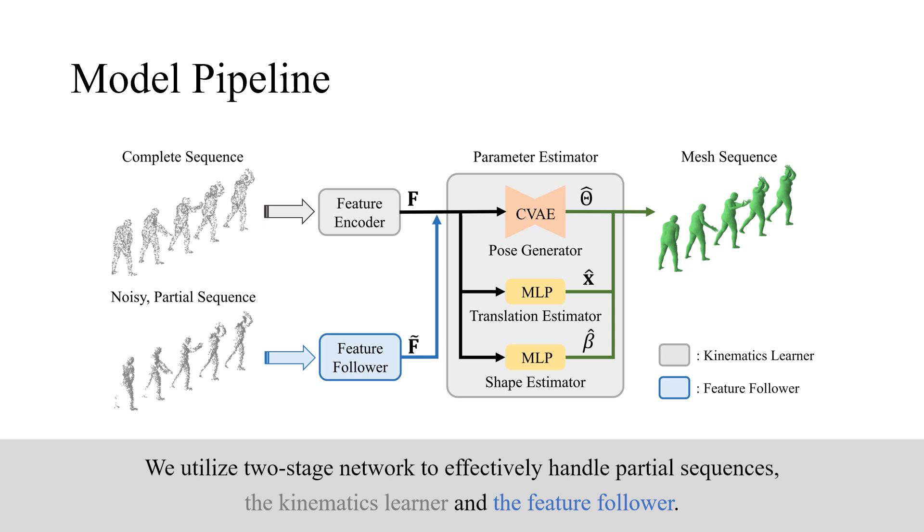We utilize a two-stage network to effectively handle partial sequences: the Kinematics Learner and the Feature Follower.